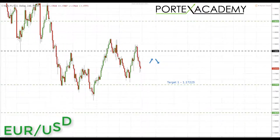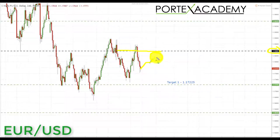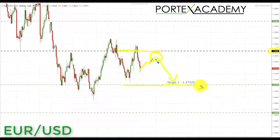The first pair we're going to look at is the euro US dollar. Last week the euro US dollar sold off from the key area of resistance at 1.18363. As long as we stay below this key area of resistance we are going to look for a correction, and after that correction takes place we are going to look for bearish formations and patterns to appear. We're going to be looking at taking those shorts down towards the target of 1.17225, which is the next key area of support in the euro US dollar.